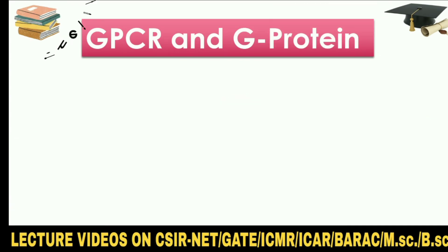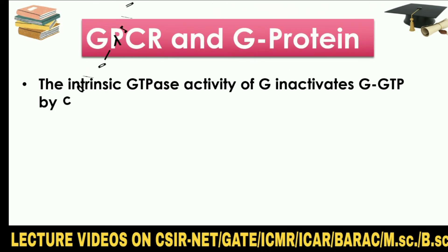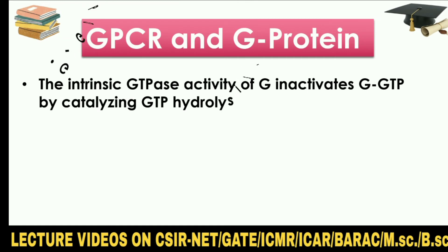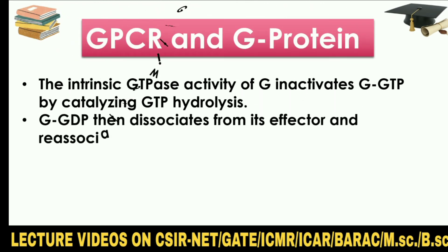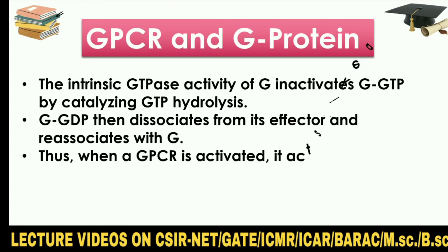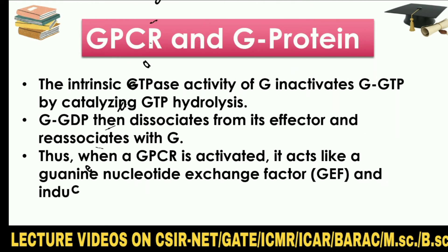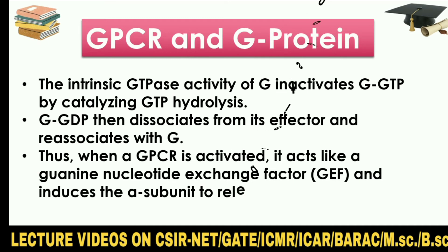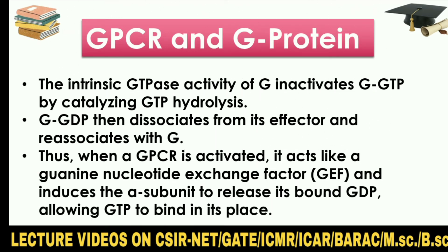The intrinsic GTPase activity of G-alpha inactivates G-alpha-GTP by catalyzing GTP hydrolysis. G-alpha-GDP then dissociates from its effector and reassociates with G-beta-gamma. Thus, when a GPCR is activated, it acts like a guanine nucleotide exchange factor and induces the alpha subunit to release its bound GDP, allowing GTP to bind in its place.